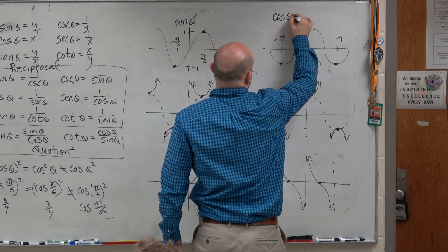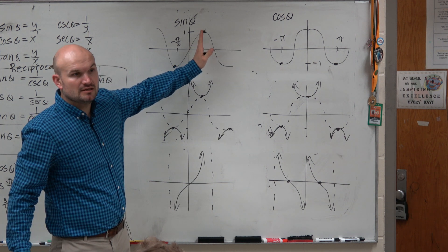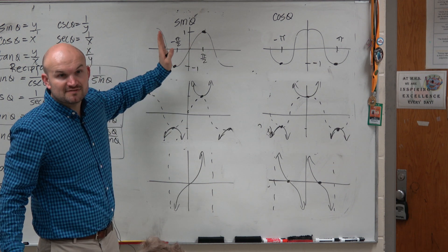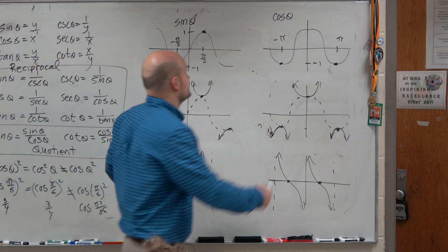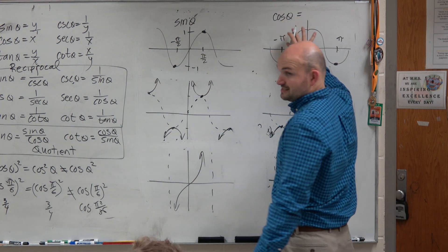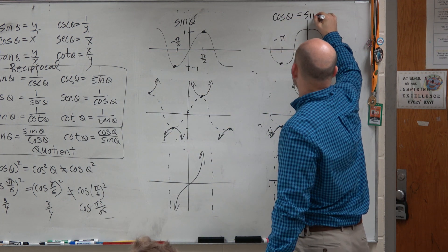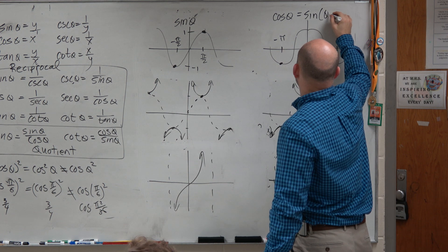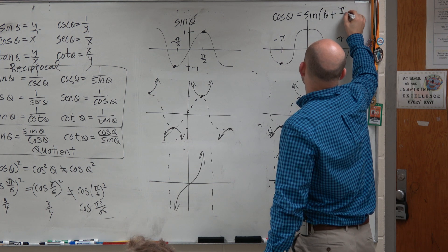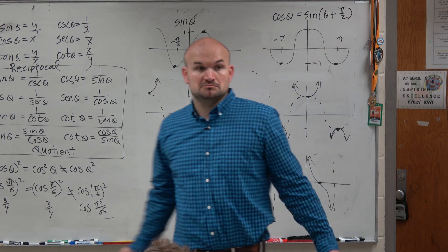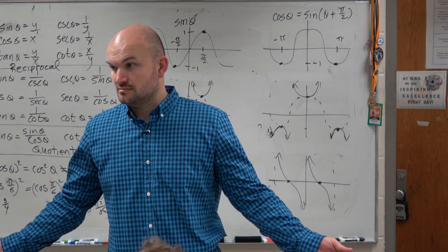So you could think about that. You could say, well, what if I just shifted this left pi over two? Doesn't that work? So I could say cosine of theta. Yes, this is the cosine of theta, but that's also the same thing as sine of theta plus pi halves. Yes? Wouldn't you guys agree?